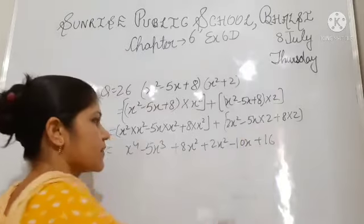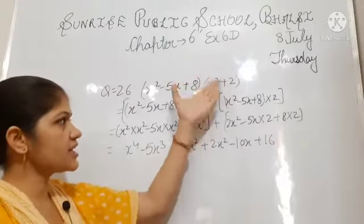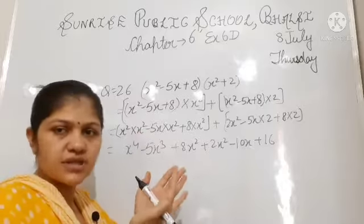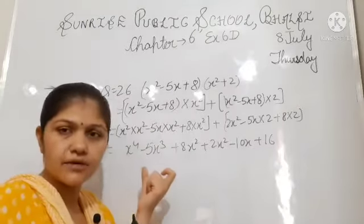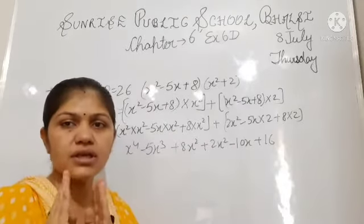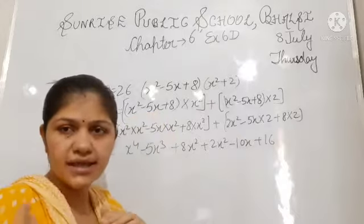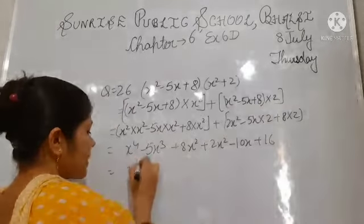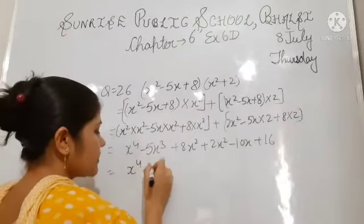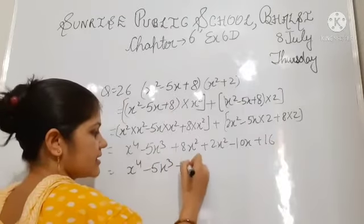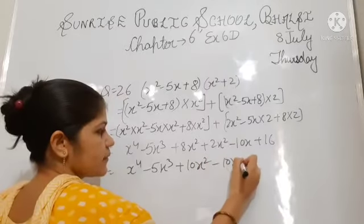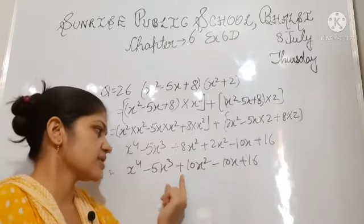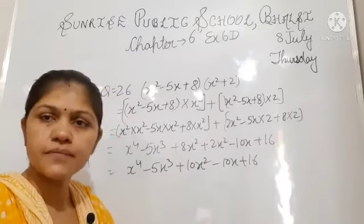The first step should be clear: understand how to multiply each term, then it is simple multiplication — the same as the previous questions in this exercise, where single terms multiply with each other. Pay special attention to the plus and minus signs: minus times minus is plus, plus times minus is minus, and so on. Collecting like terms: x to the power 4 minus 5x cubed plus 10x squared minus 10x plus 16. This is the final result.